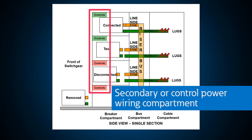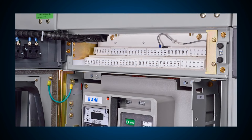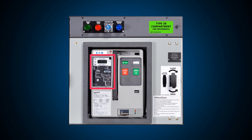The secondary or control power wiring compartment contains the circuits used to provide power to control and monitoring equipment for electrically operated devices such as solid state trip units, circuit breaker accessories, pilot lights, meters, and control switches. Power circuit breakers have many electrical components within them that need to be connected to external power sources or to monitoring, metering, or controlling equipment.